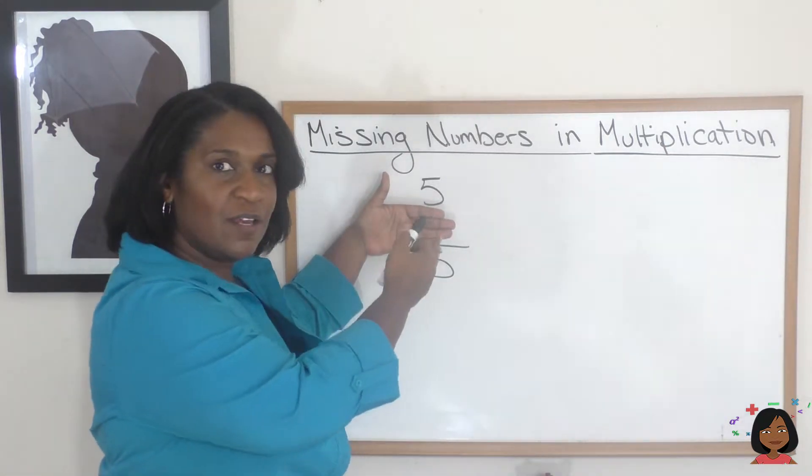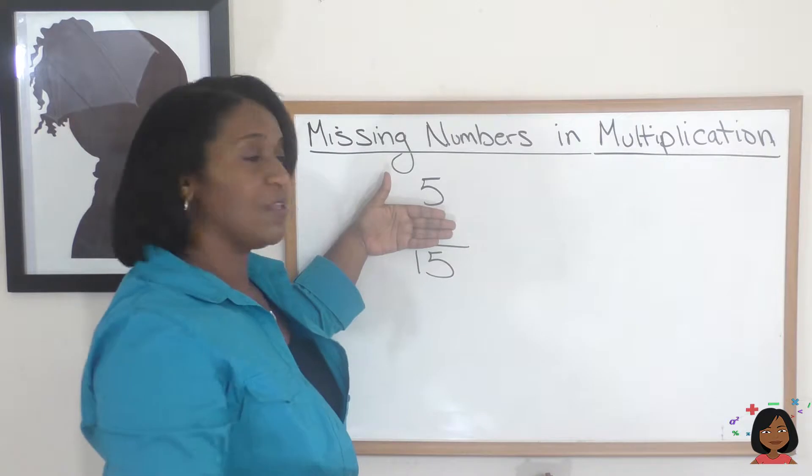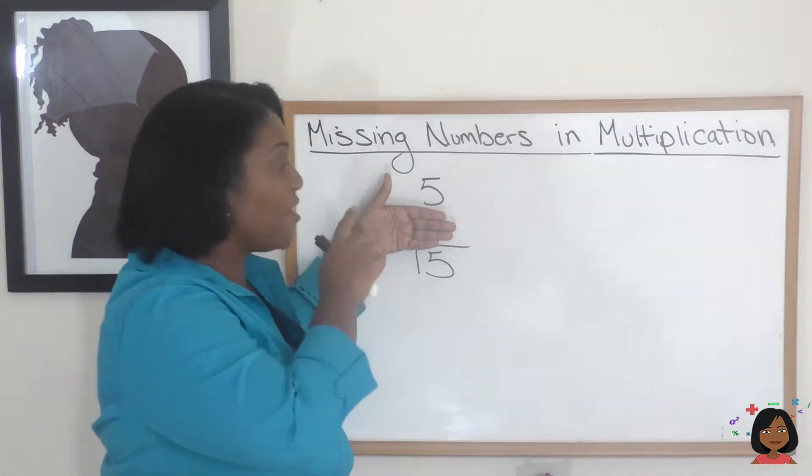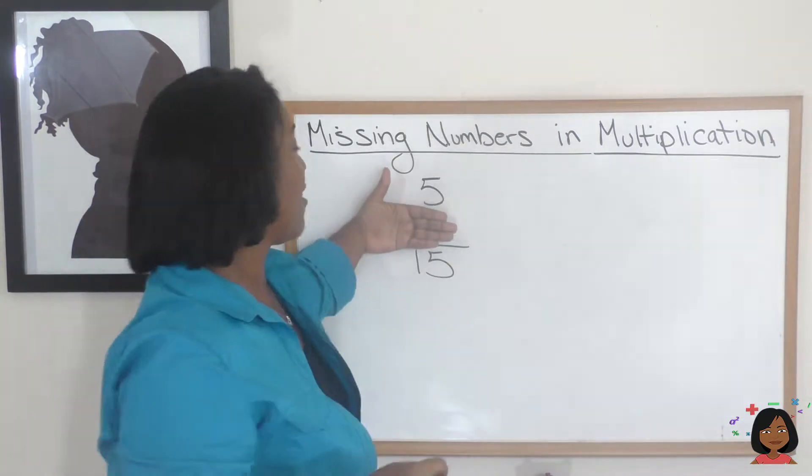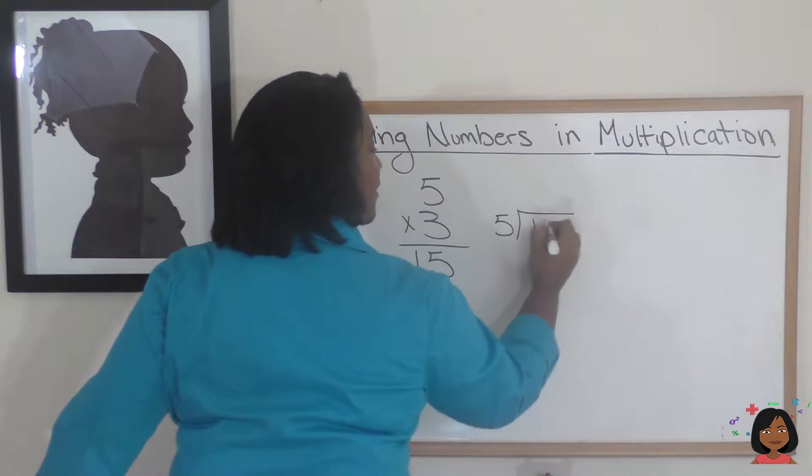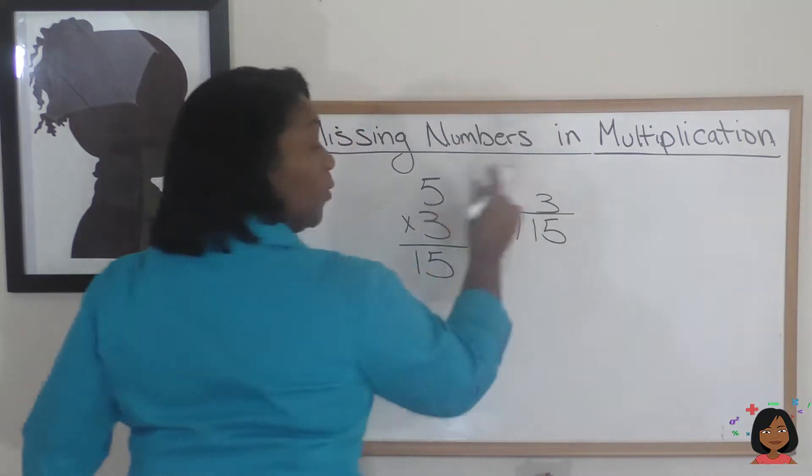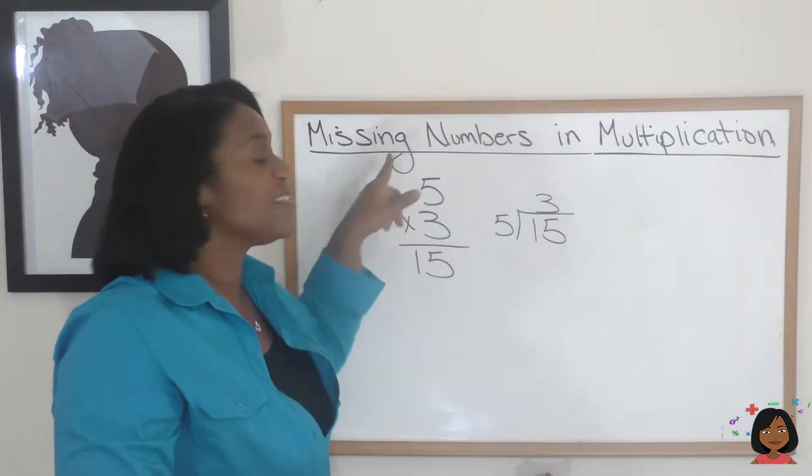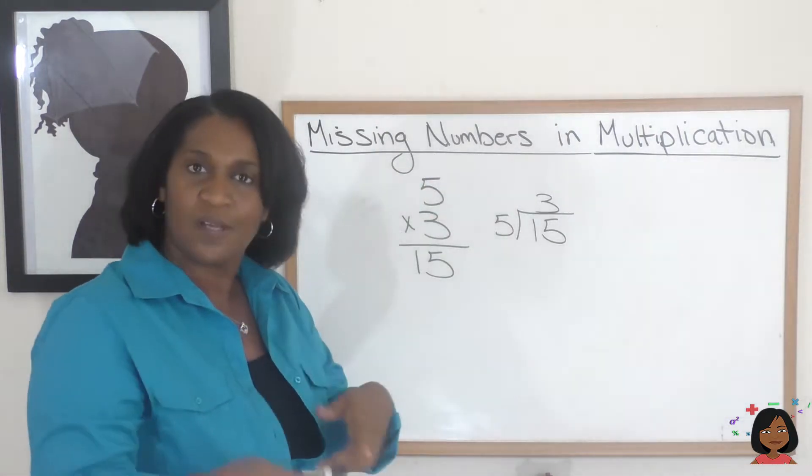Knowing what you know about multiplication, you also know that 15 is really about division. 15 divided by 5 would be 3. So maybe division has something to do with finding missing numbers in multiplication.